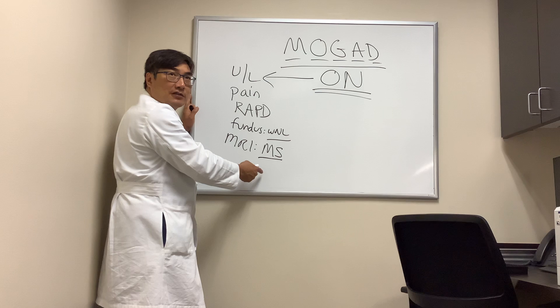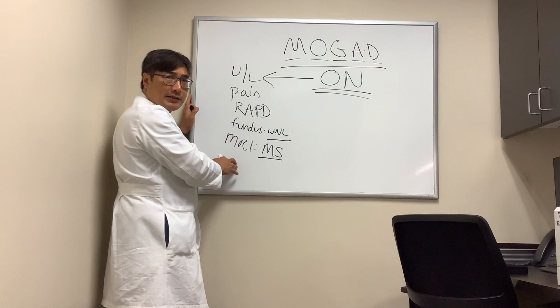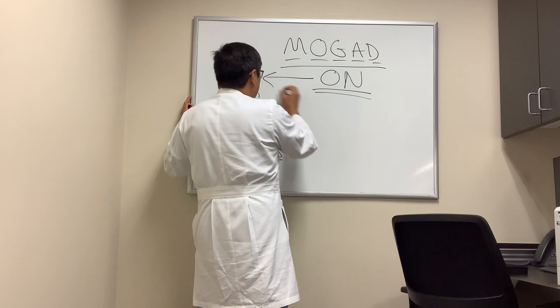In this typical demyelinating optic neuritis patient, we would not order MOG or NMO antibodies — they have MS. Management includes lumbar puncture for oligoclonal bands, MRI of the cervical spine, neurology referral, and consideration for intravenous steroids in the acute phase, followed by disease-modifying therapy for multiple sclerosis.